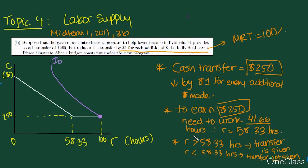Because if we earn more than $250, then the government won't provide us this transfer. So we need to work 41.66 hours. That means R needs to equal 58.33 hours. So looking at R for 58.33 hours and more, we know that Alice will definitely receive $250 no matter how many hours, she'll receive it indefinitely.